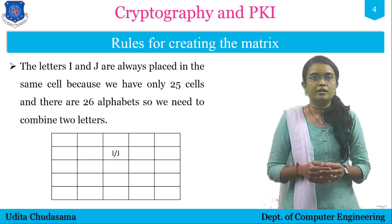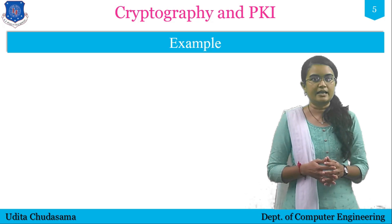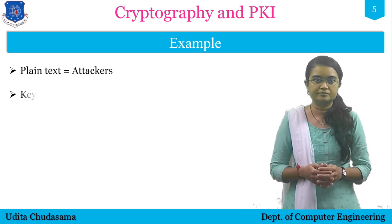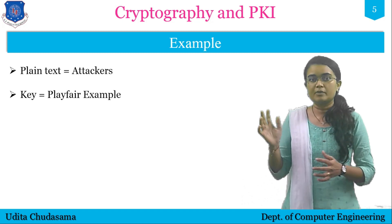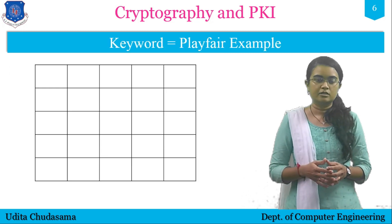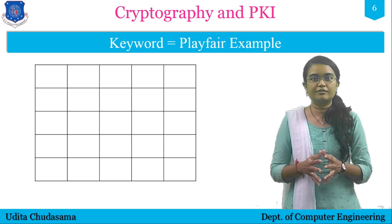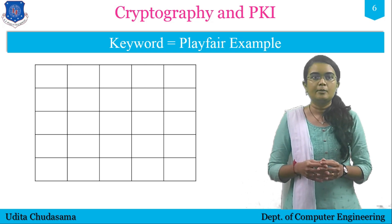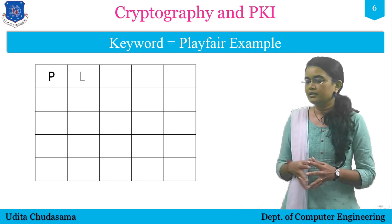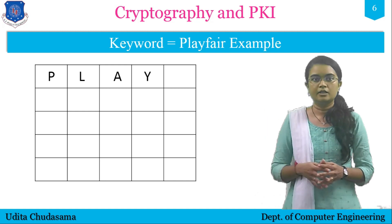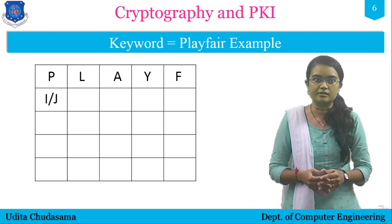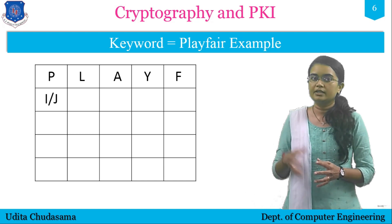Let us take an example. We have a plain text of 'attackers' and the keyword is 'playfair example'. First we need to create the matrix and then perform the Playfair Cipher encryption. We start placing the keyword letters: P, L, A, Y, F, then I and J together in the same cell — remember, I and J are written in the same cell, so we write I/J instead of only I.